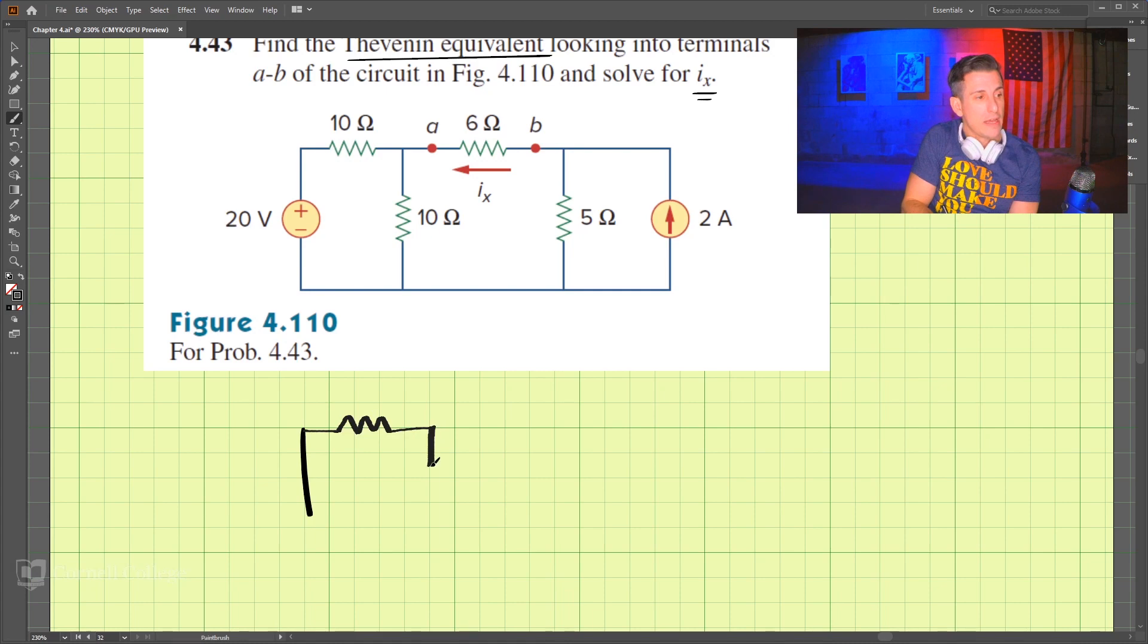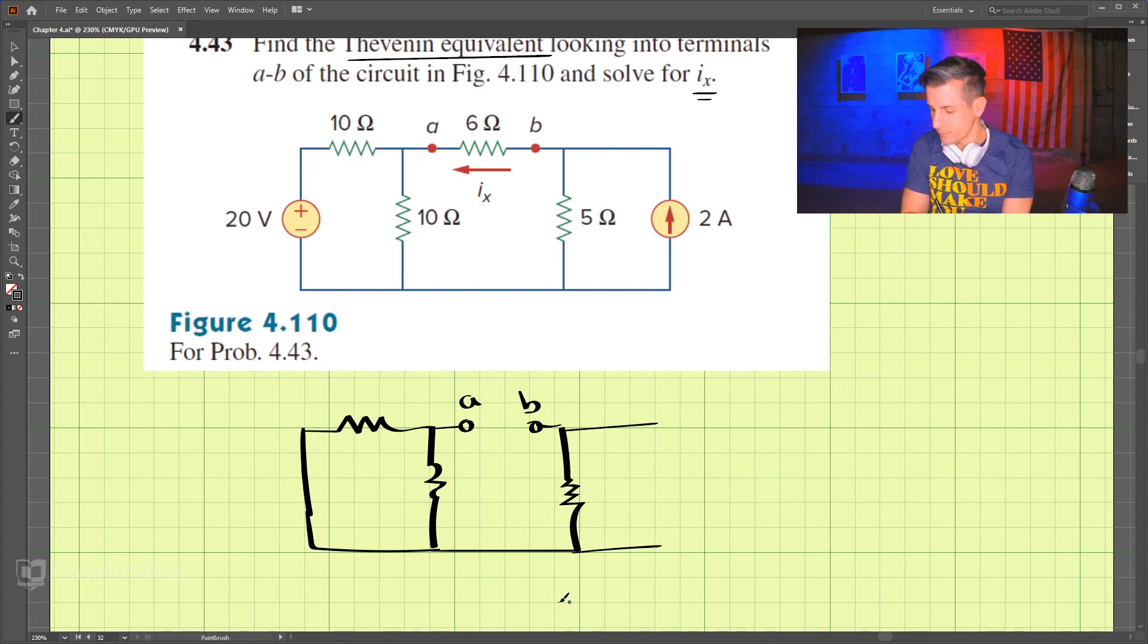and then we have this resistor, and we're looking for A to B, and this becomes an open circuit. And so we have 5 ohms here, and we have 10 ohms here, and 10 ohms here.